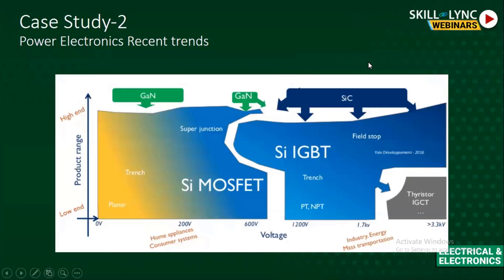Case study two covers recent trends in power electronics. This goes into depth on the types of switches used. Currently, all power electronics components are made of silicon substrate. However, silicon is less efficient compared to silicon carbide (SiC) and gallium nitride (GaN). In the graph, you can see the silicon MOSFET voltage range lies up to about 600 V. The topologies — planar, trench, and super junction — cover product ranges from low-end to higher-end, and silicon MOSFET dominates the current market.